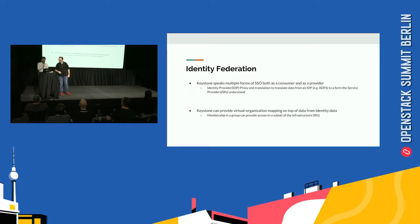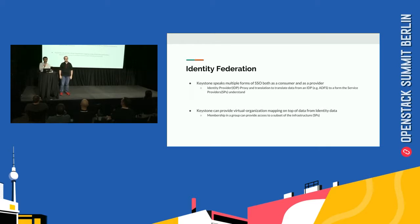One cool thing about Keystone is that you can federate two clouds together, using Keystone as an IDP for one cloud and using Keystone as an SP for the other cloud. And that tends to work really well for identity federation.